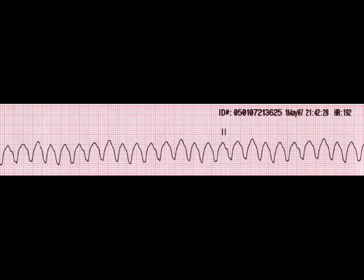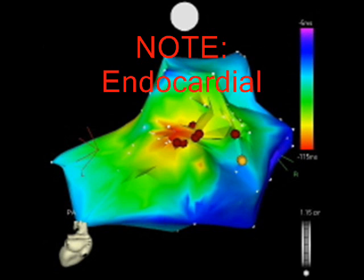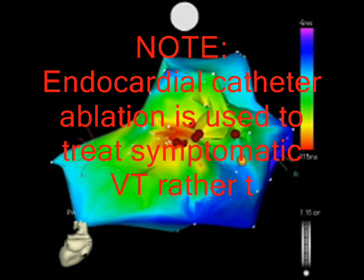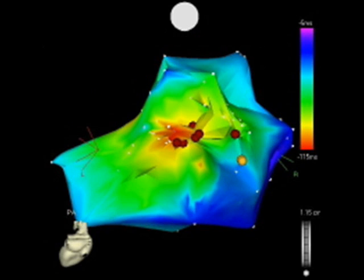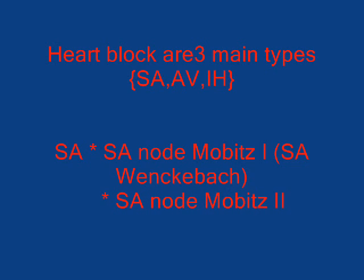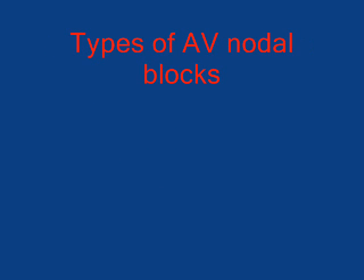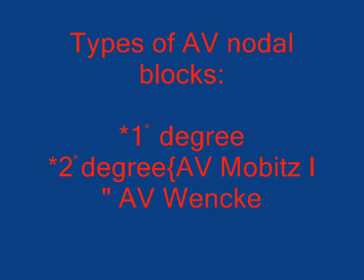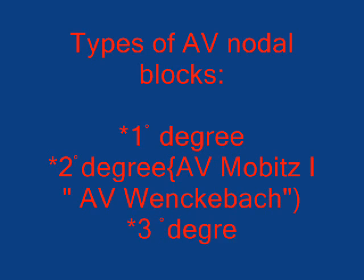Treatment for unstable VT is electrical cardioversion. Anti-arrhythmic drugs include amiodarone and lidocaine. Endocardial ablation is used to treat symptomatic VT. Heart blocks have three main types: SA block including Mobitz I or Sinoatrial Wenckebach, Mobitz II, and SA node exit block. AV block includes first degree, second degree Mobitz I or AV Wenckebach, and third degree. The last type is infra-Hisian block.